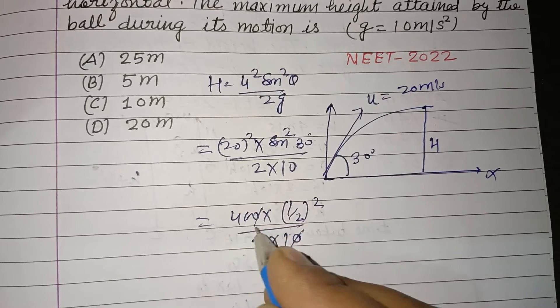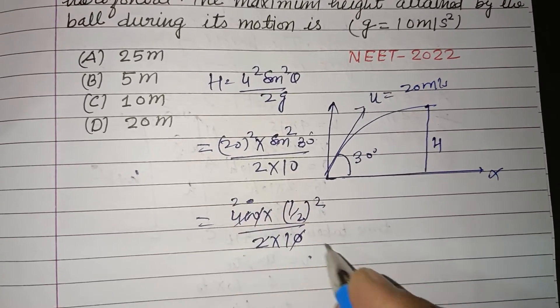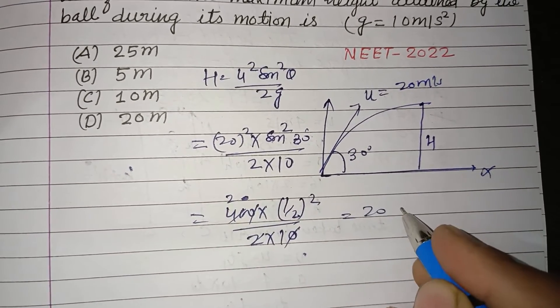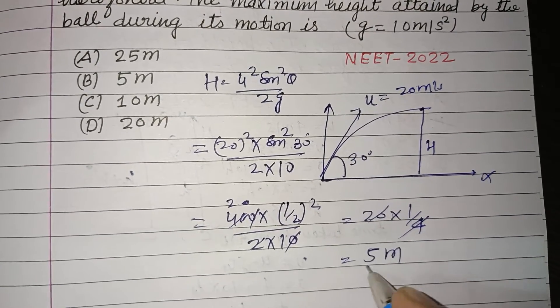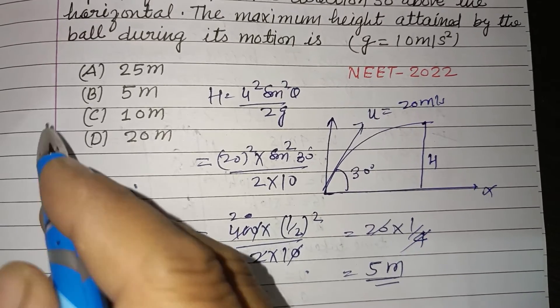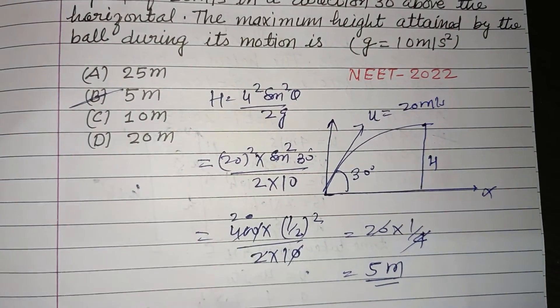So zeros cancel, 2 cancels with 4, giving 20. So 20 into 1 upon 4 equals 5 meters. So 5 meters is the maximum height attained by the ball, so B is the correct answer to this question.